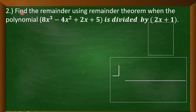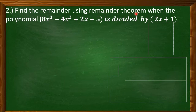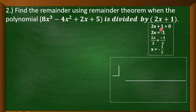Now let's have the second example. Find the remainder using the remainder theorem when the polynomial quantity of 8x cubed minus 4x squared plus 2x plus 5 is divided by quantity of 2x plus 1. First, we have to solve for x. Copy 2x plus 1 and equate it with 0. Transpose 1 to the right side, so it becomes negative 1. Then divide both sides by 2: 2x divided by 2 is x, and negative 1 divided by 2 is negative 1 half.